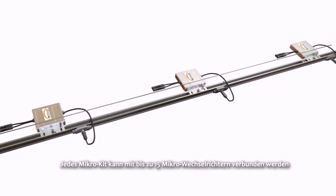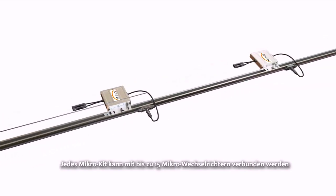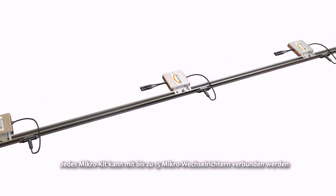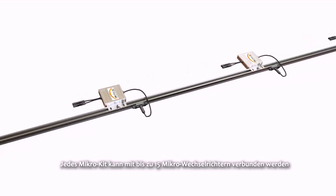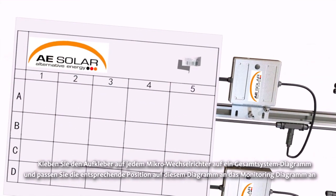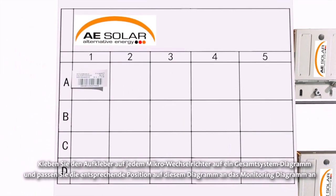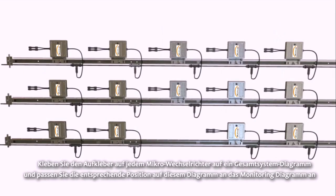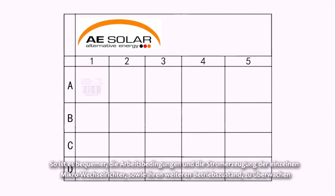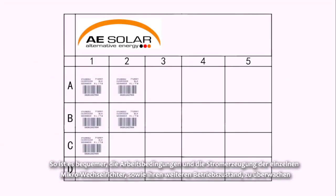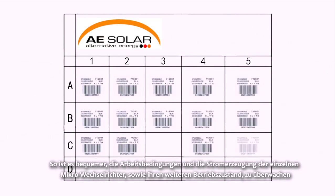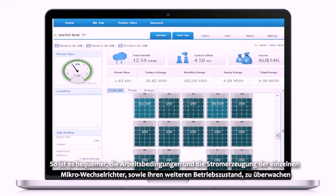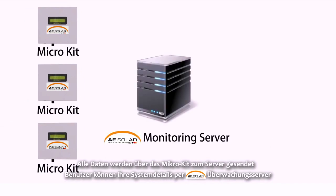Each micro kit can be connected to up to 15 microinverters. Stick the label on each microinverter onto an overall system diagram and match the corresponding location on this diagram with the monitoring diagram. This makes it convenient to monitor the working condition and power generation of each microinverter and for further maintenance as well.